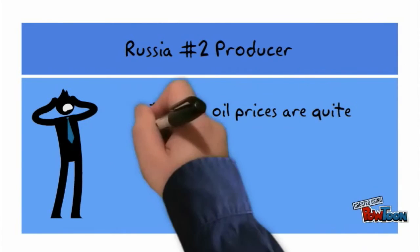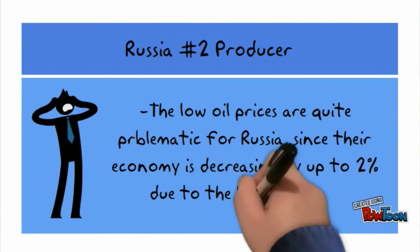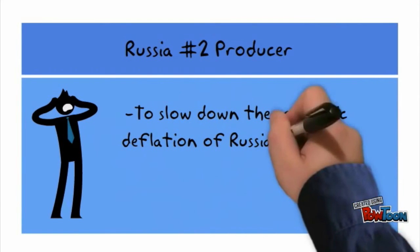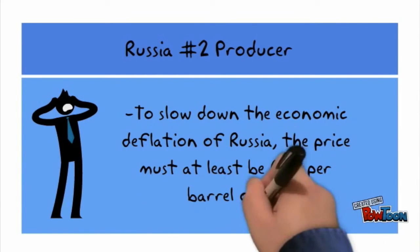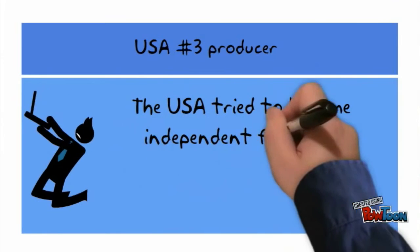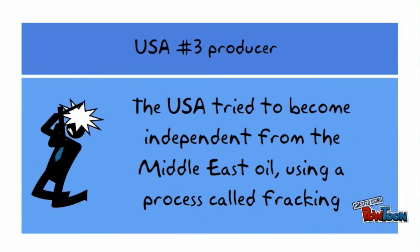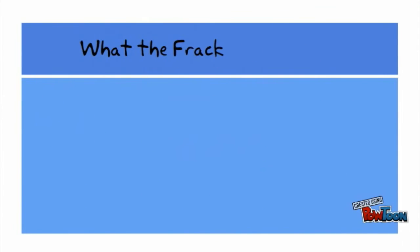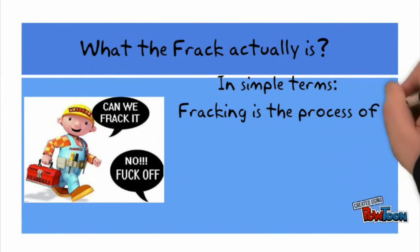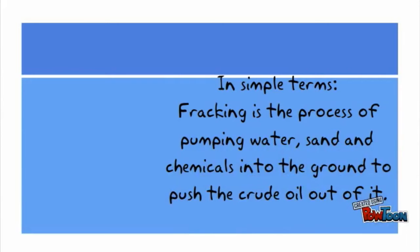Russia is the number two producer. The low oil prices are quite problematic for Russia since their economy is decreasing by up to 2% due to the low income. To slow down this economic deflation of Russia, the prices must be at least $60 per barrel. USA is the number three producer. The USA tried to become independent from Middle East oil using a process called fracking. Fracking is the process of pumping water, sand, and chemicals into the ground to push the crude oil out of it.